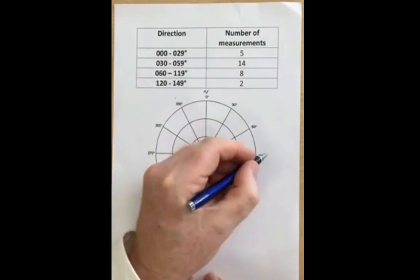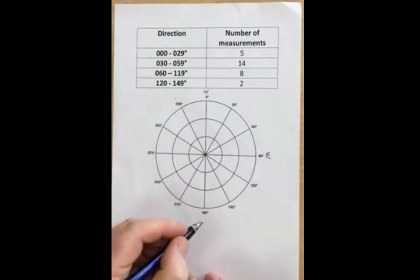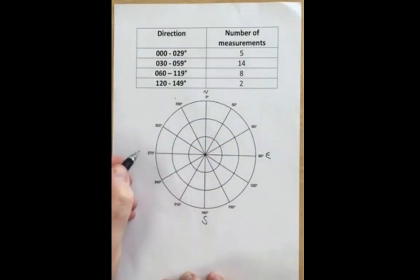So we have north, east, south, and west shown on our diagram. The radial lines on the diagram represent these different bearings with angles with respect to north.